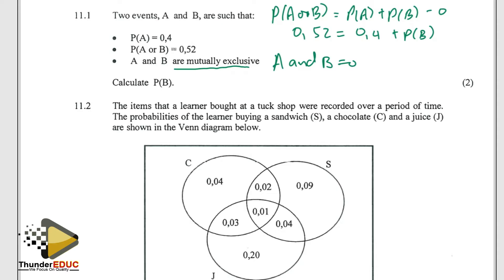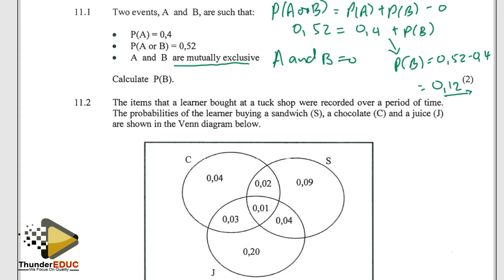Wait, this was not 0.4 — let me just double check and be sure. So probability of B is 0.52 minus 0.4. This gives me 0.12. Let's take that as our answer.